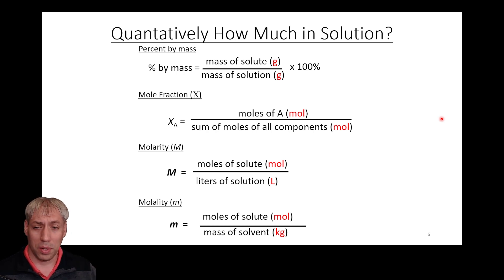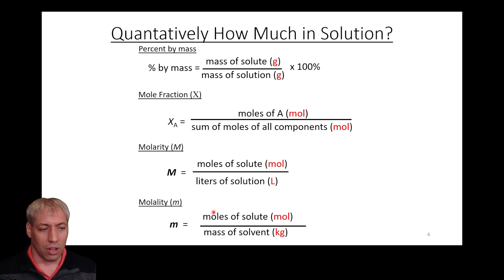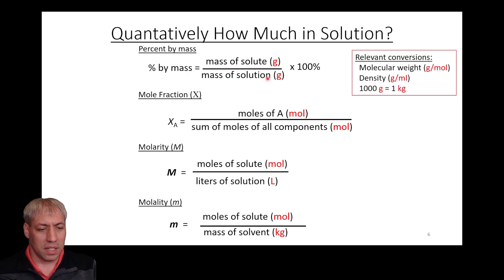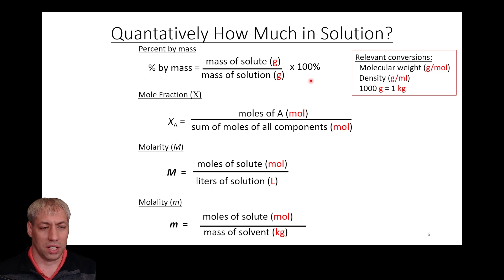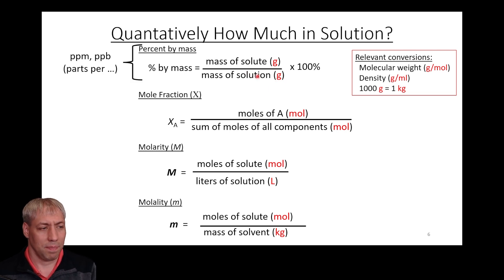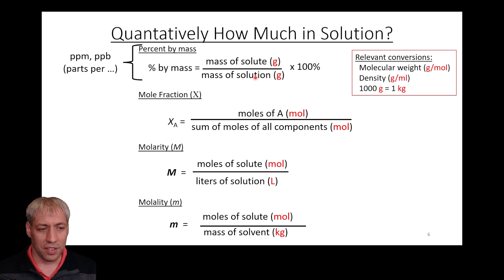Saturated, unsaturated, and supersaturated are not particularly quantitative — we don't know exactly how much is in solution. So in science we use specific nomenclature: percent by mass, mole fraction, molarity, and molality. These are all different ways to describe concentration, and you can convert between any of them as long as you have molecular weight, density, and unit conversions. Mass percent is what you hear with parts per million or parts per billion — it's the mass of solute divided by total mass of solution.